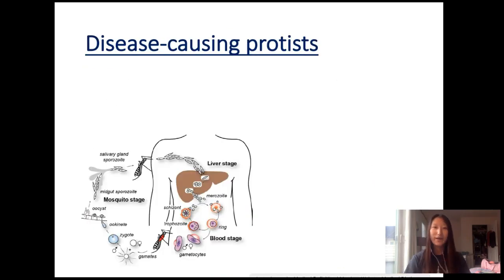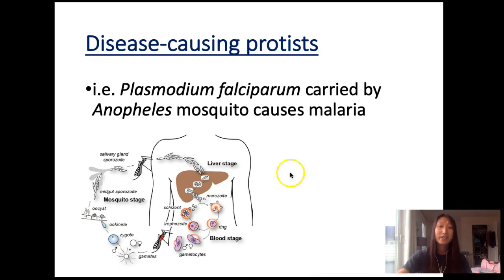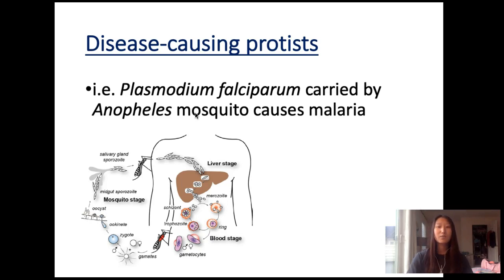Now here's the bad part. There are certain protists that can cause diseases — such as a certain type of amoeba. There are protists like plasmodium falciparum that cause malaria.